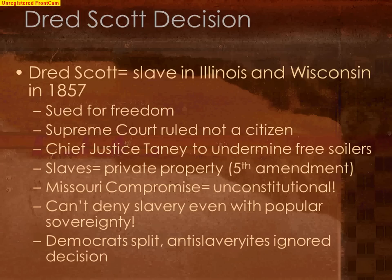According to Justice Taney in the Dred Scott decision, it didn't matter whether a state was free soil or slave — slaves could be taken anywhere in the United States because the U.S. government protects private property. Just as you couldn't deny a person from taking their chair with them when they moved to the North, the same principle applied to slaves. Based on this, Taney said the Missouri Compromise of 1820 was unconstitutional, and that even popular sovereignty couldn't stop it, because a slave owner could take his personal property to any territory. This split the Democrats right down the center and caused major controversy.